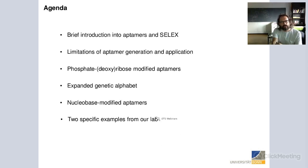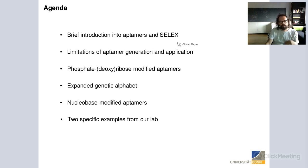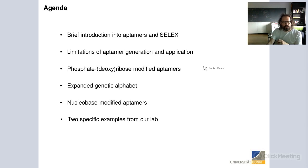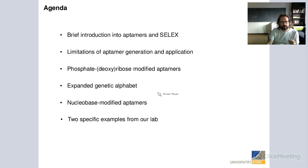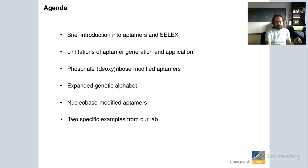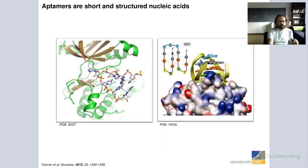Here's the agenda I'd like to walk you through briefly. I'll give a short introduction to aptamers — most of you are probably familiar, but just as a reminder — then we'll go over the limitations of aptamer generation currently seen in the lab and applications, and how we solve them. I'll give examples, then cover modified aptamer versions: phosphate, oxygen, both modified aptamers, those with an expanded genetic alphabet, and nucleobase-modified aptamers. I'll finish with two specific examples from our lab.